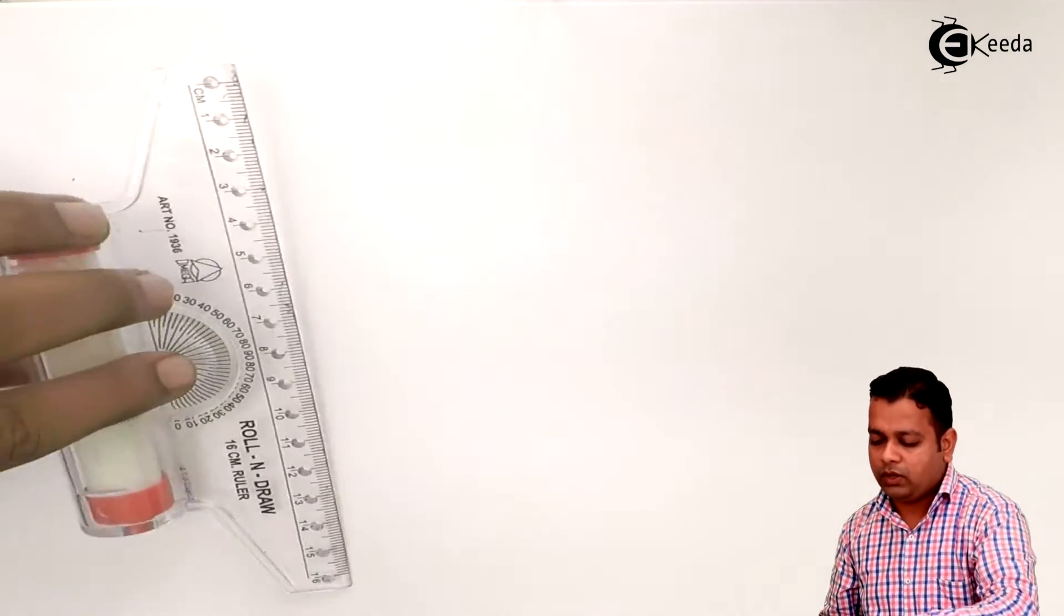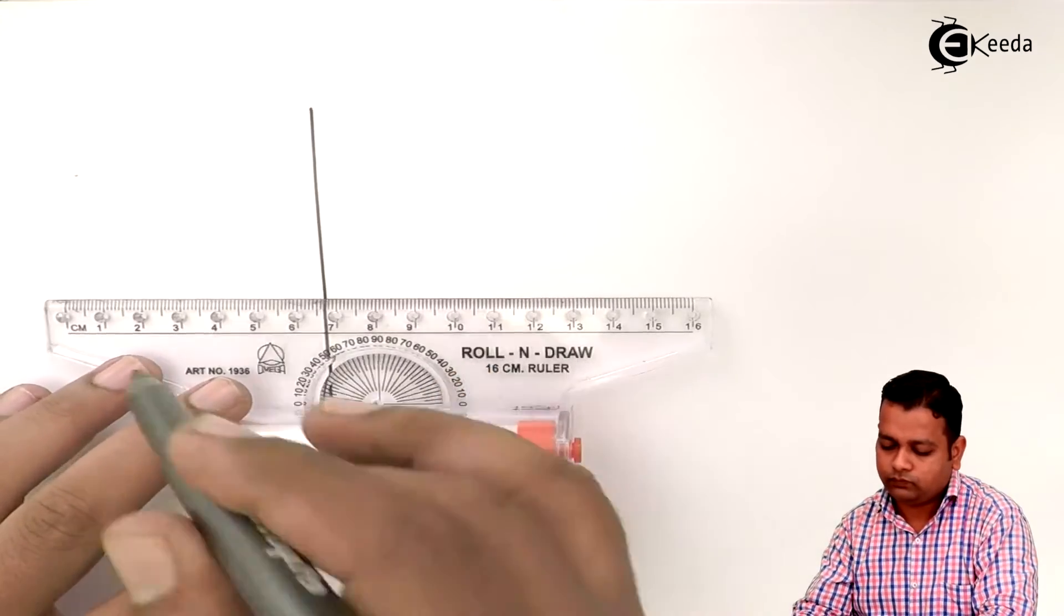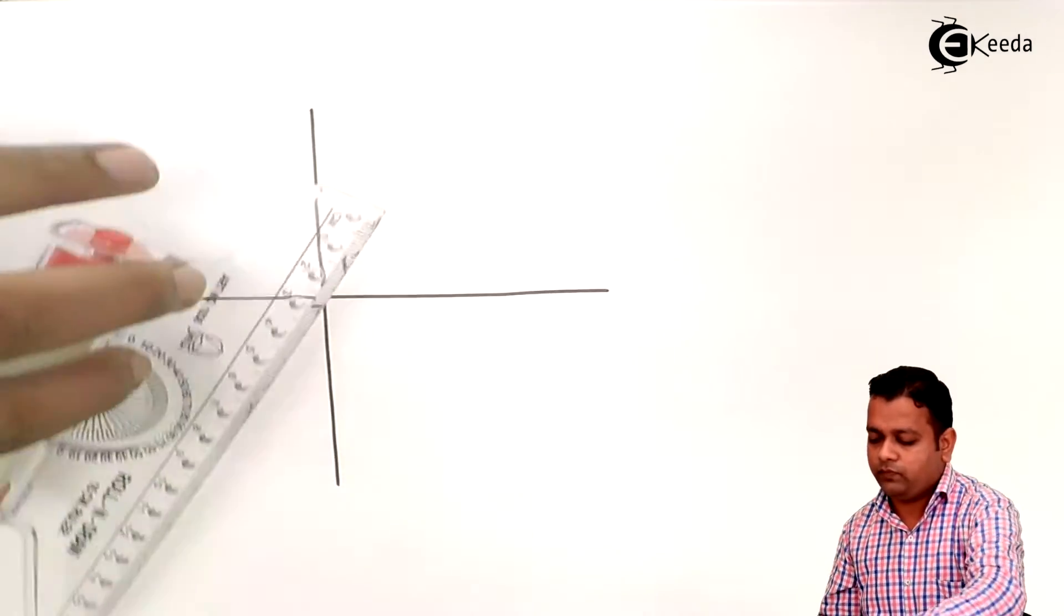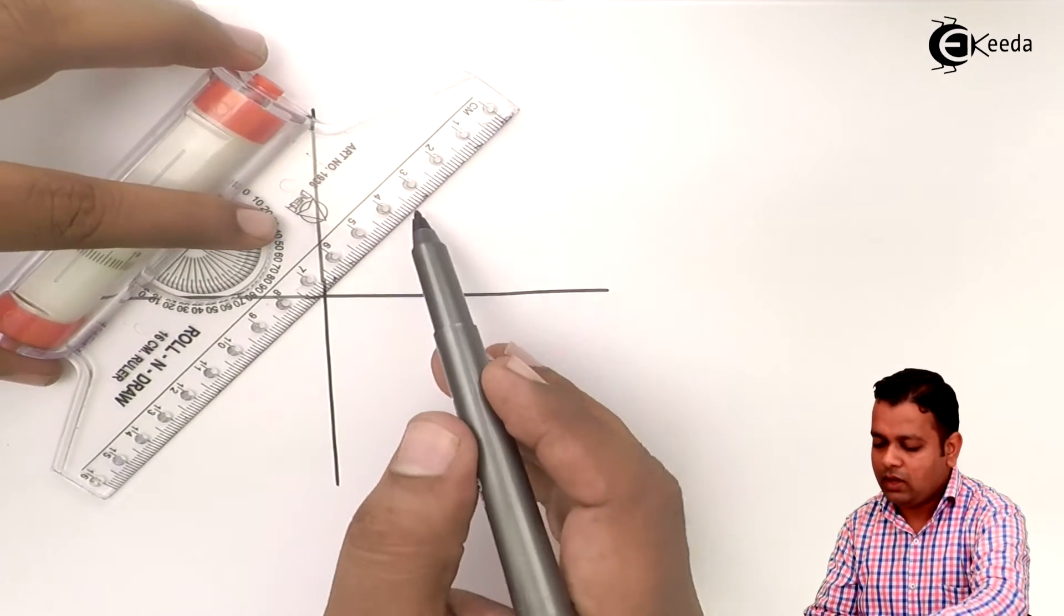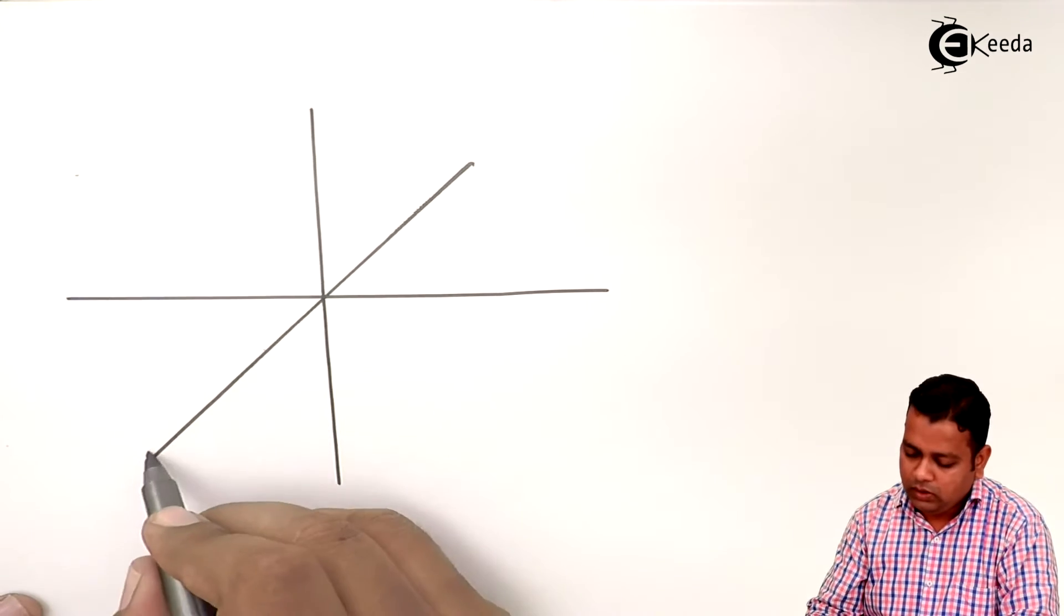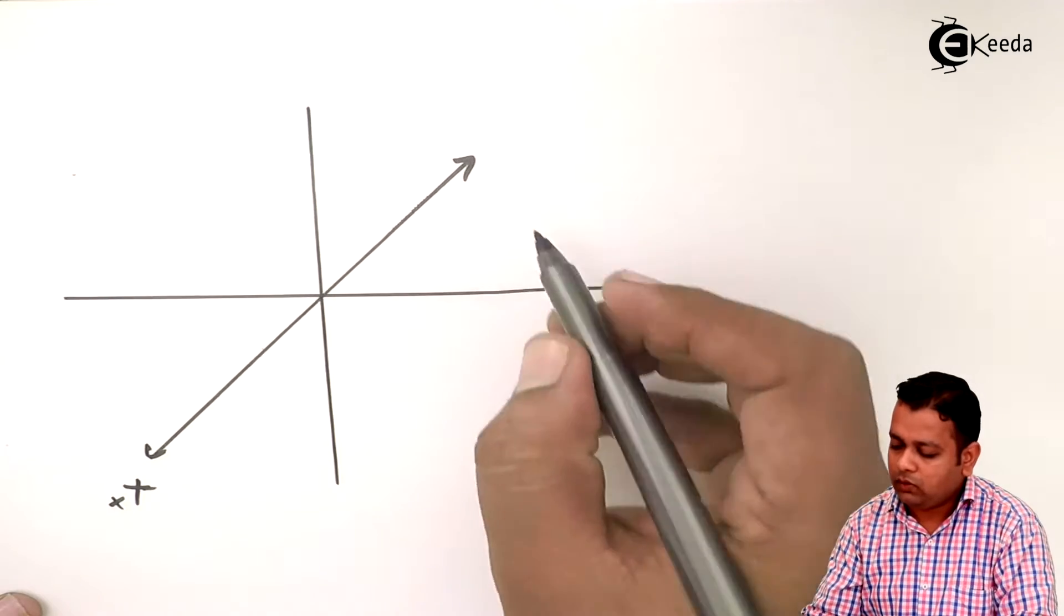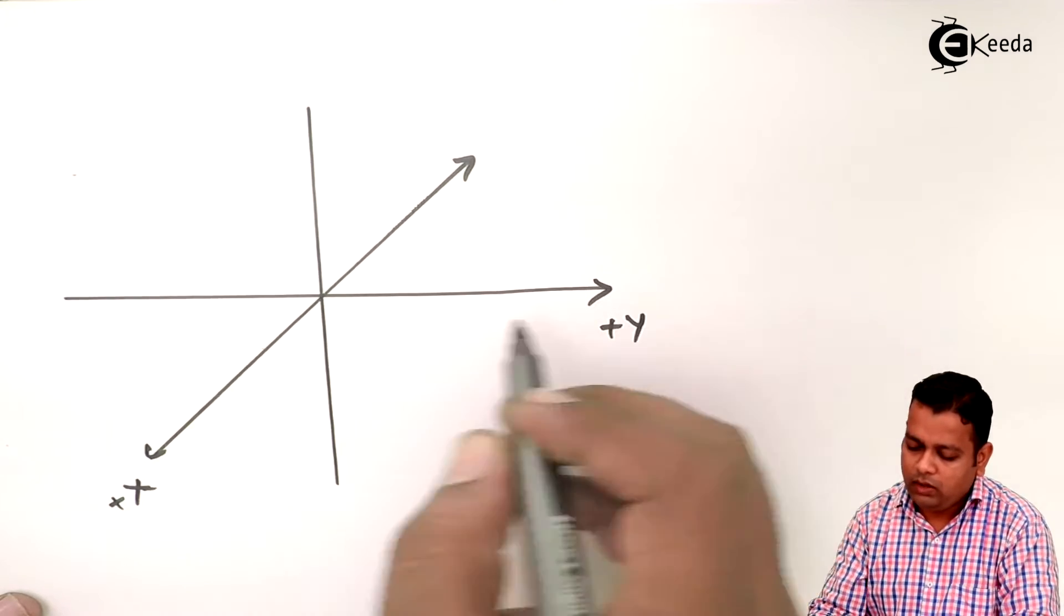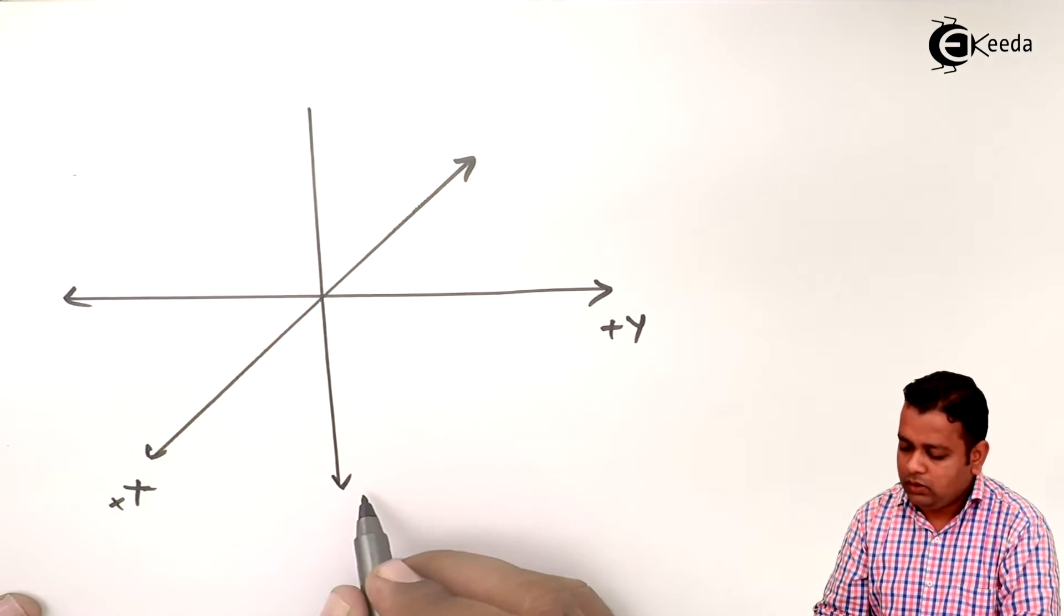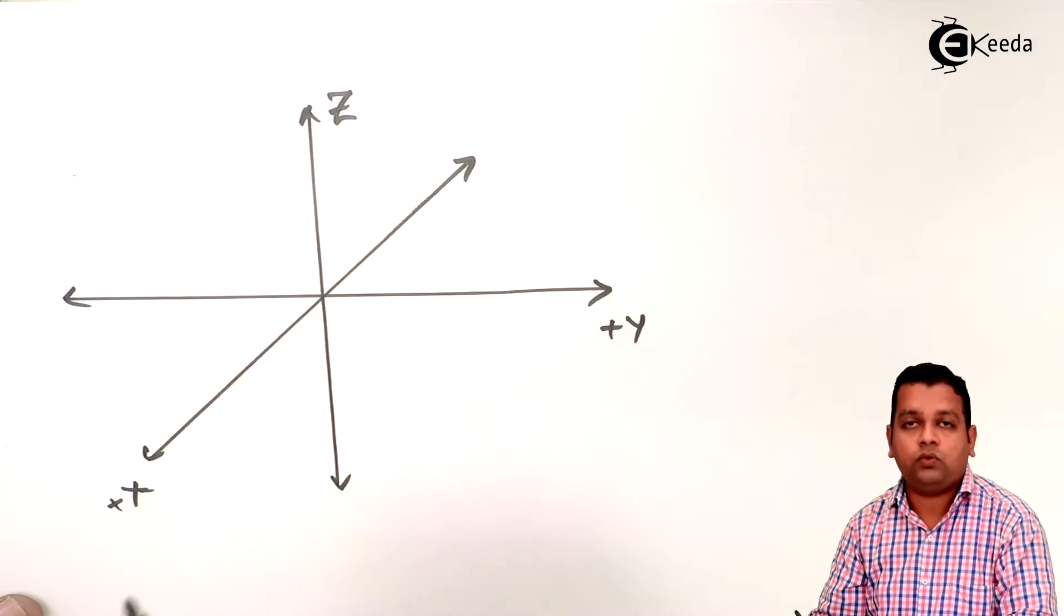So we take the help of the z axis, y axis, and x axis intersecting into the origin. So this is positive x, negative x, positive y, negative y, negative z, positive z, intersecting into the origin.